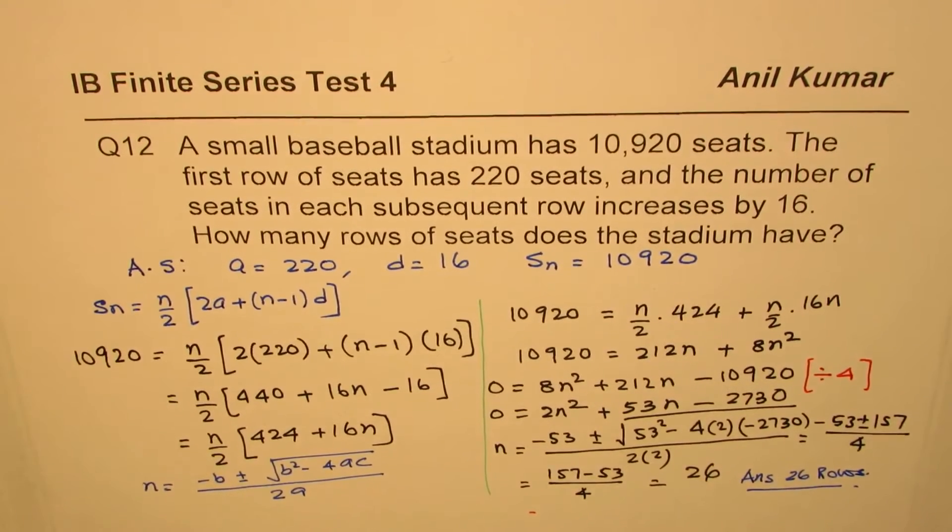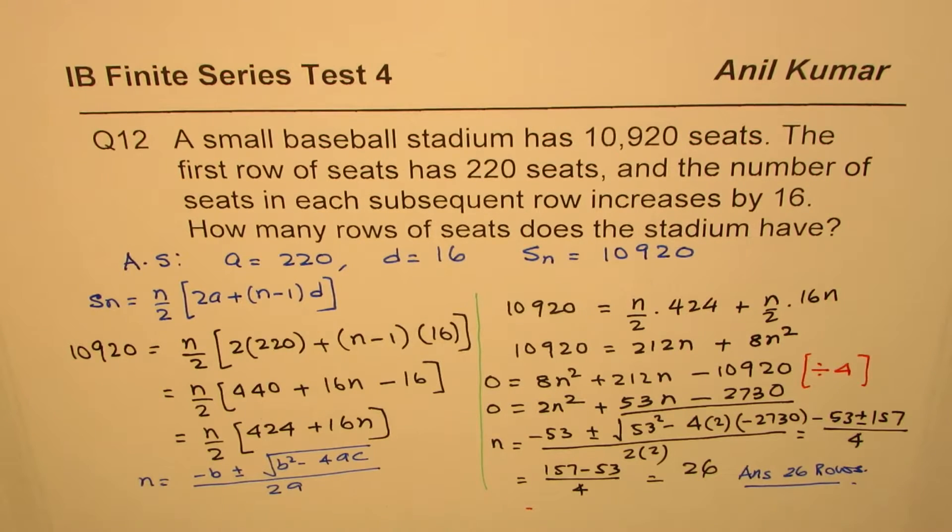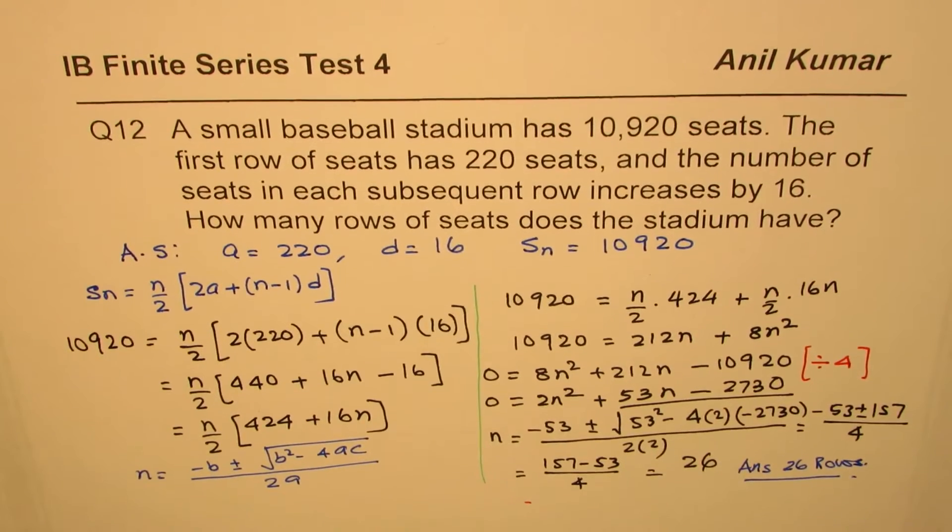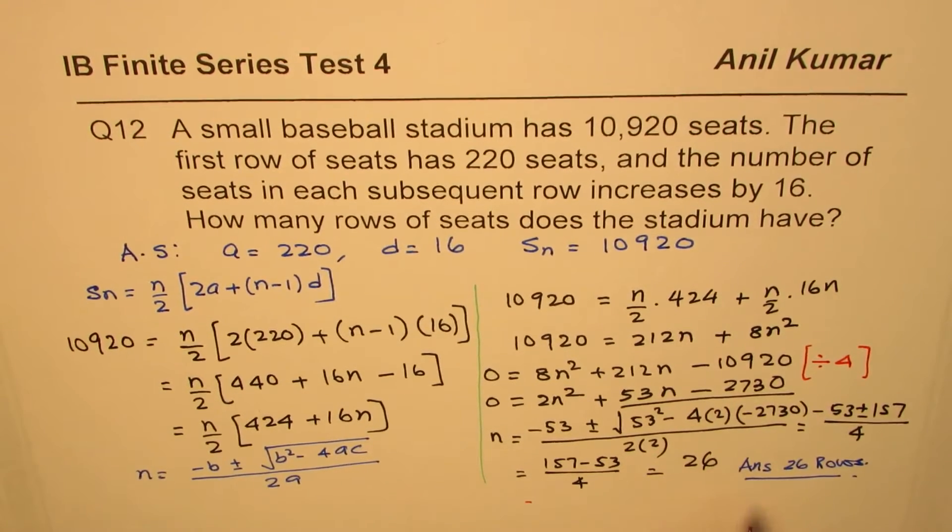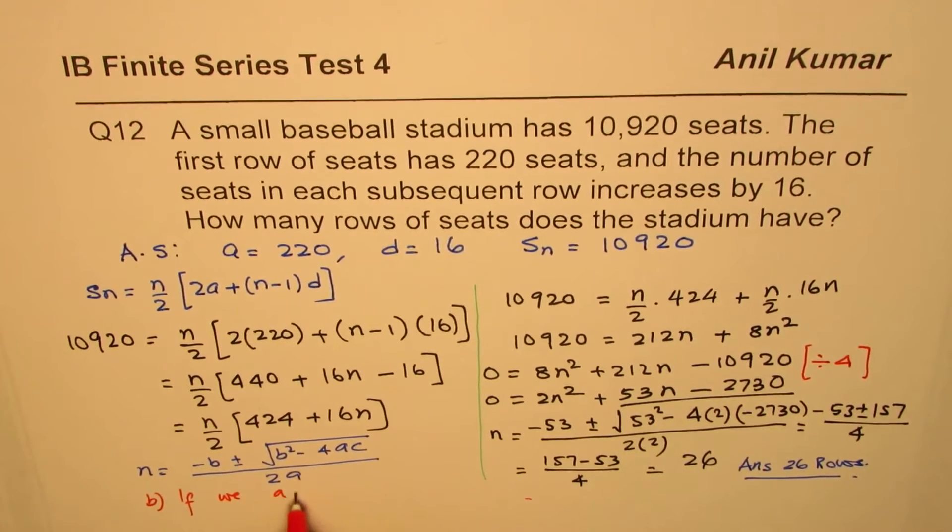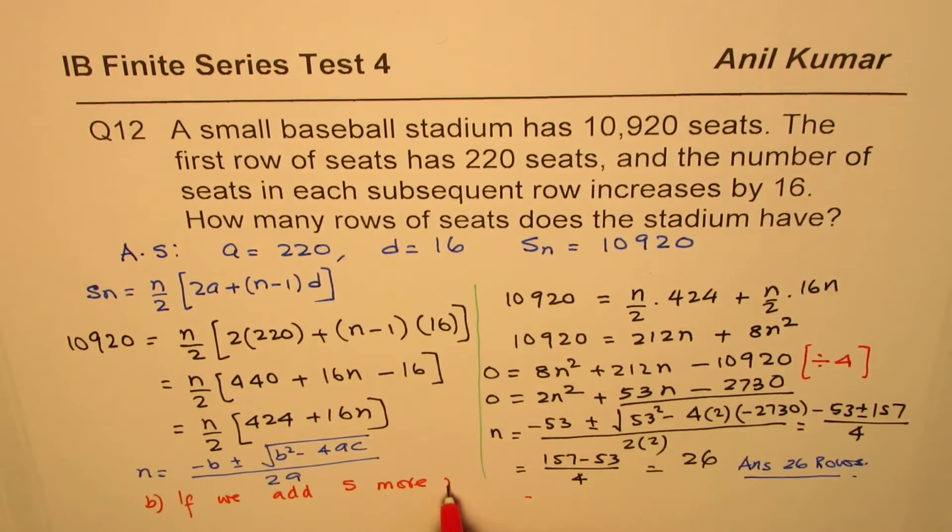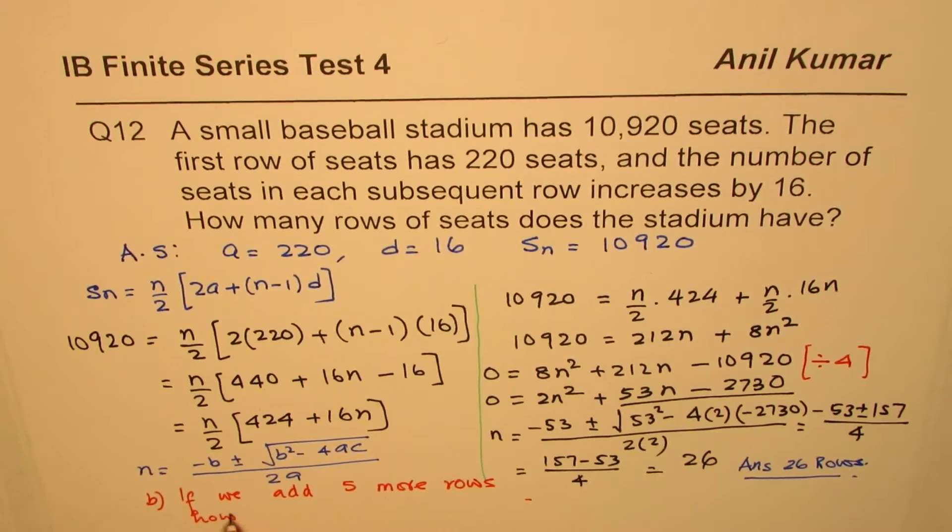So that's how you can actually find the solution of this particular question. Now, here is an extension to it. That is to say, if we add five more rows, let's say part B, if we add five more rows, how many seats will be there?